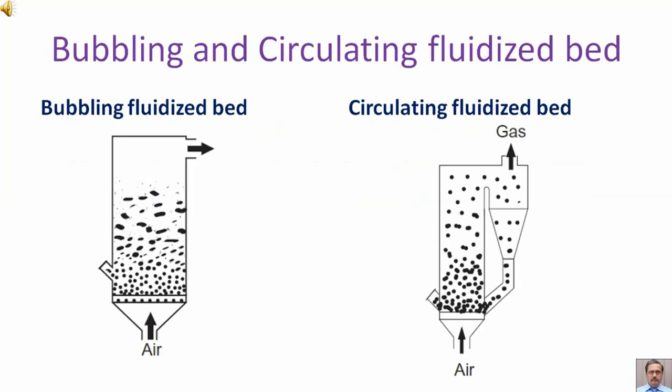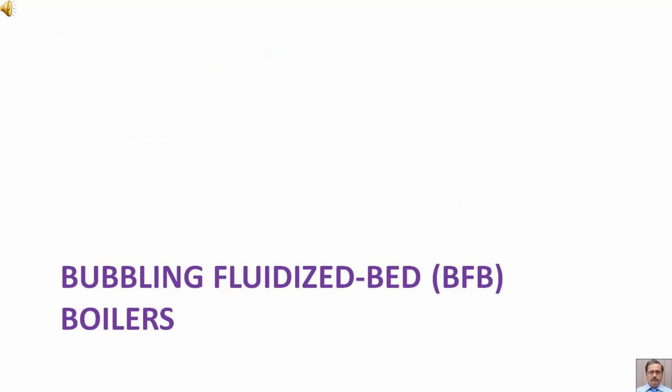only bubbling and circulating beds are currently used by the power industry to generate steam. On the left side, the bubbling fluidized bed schematic is shown. And on the right side, the schematic of the circulating fluidized bed is shown. In this lecture, we are going to discuss bubbling fluidized bed boilers.